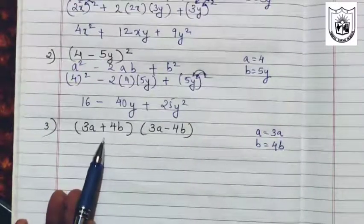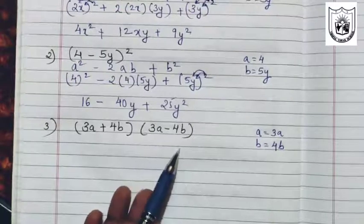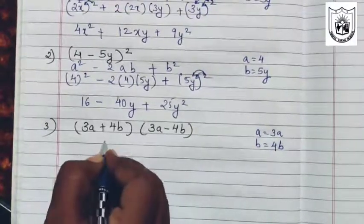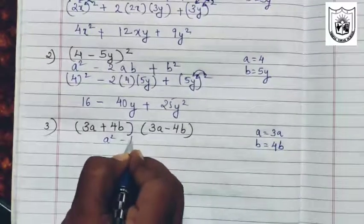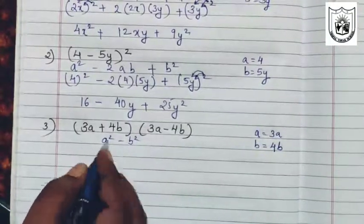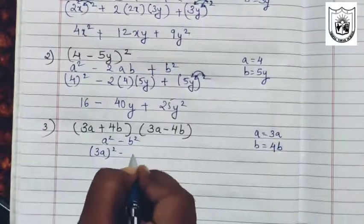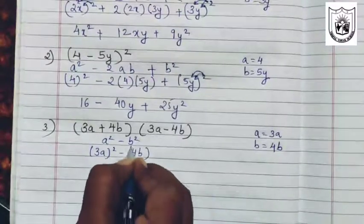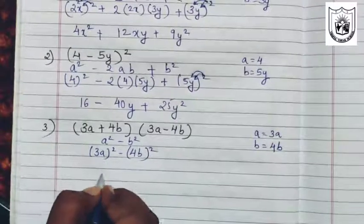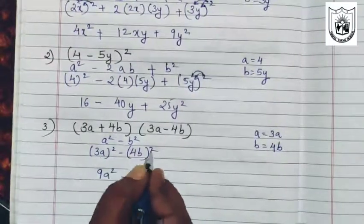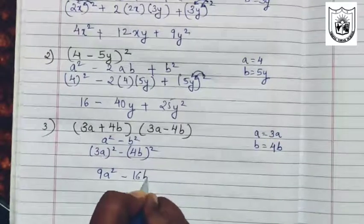Next we have 3a plus 4b, 3a minus 4b. This is in the form a plus b, a minus b and the formula here will be a square minus b square. A here is 3a, the whole square. B is 4b, the whole square. 3 square is 9a square. 4 square is 16b square.